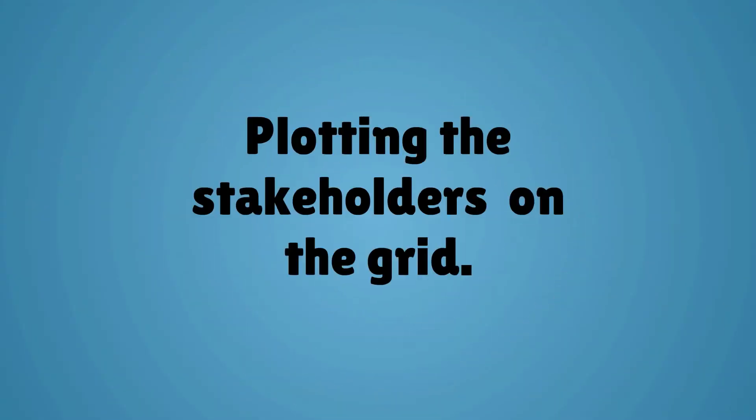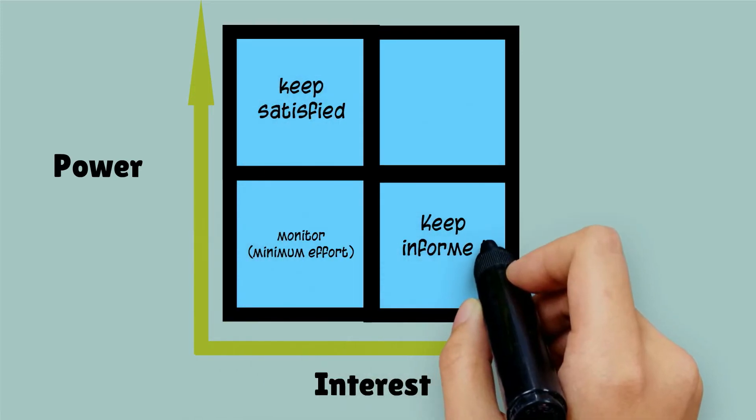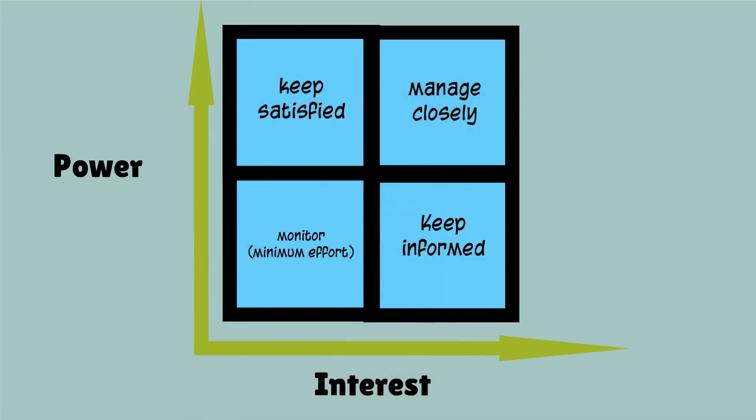In the second stage, when you know who your stakeholders are, you can plot them on the grid. The grid consists of two dimensions: the level of power and the level of interest. Both of these can be either low or high. In this way, you know where to put the stakeholder on the grid and what kind of action is being asked.